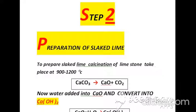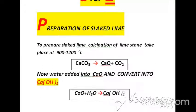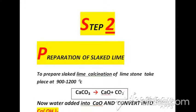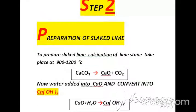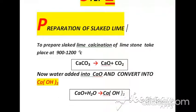The second manufacturing step of bleaching powder is preparation of slaked lime. To prepare slaked lime we start calcination of calcium carbonate; as a result we get calcium oxide and carbon dioxide at a temperature of approximately 900 to 1200 degrees centigrade.